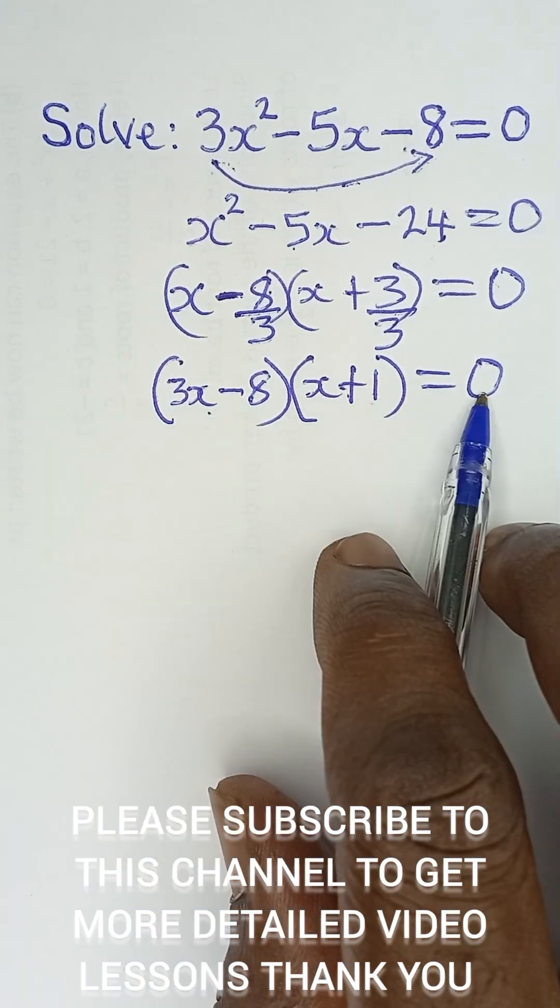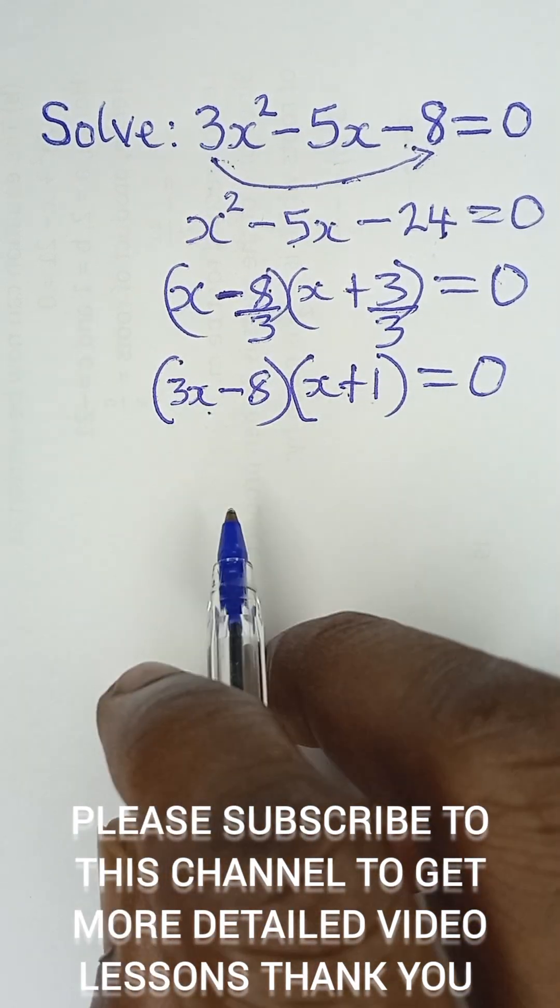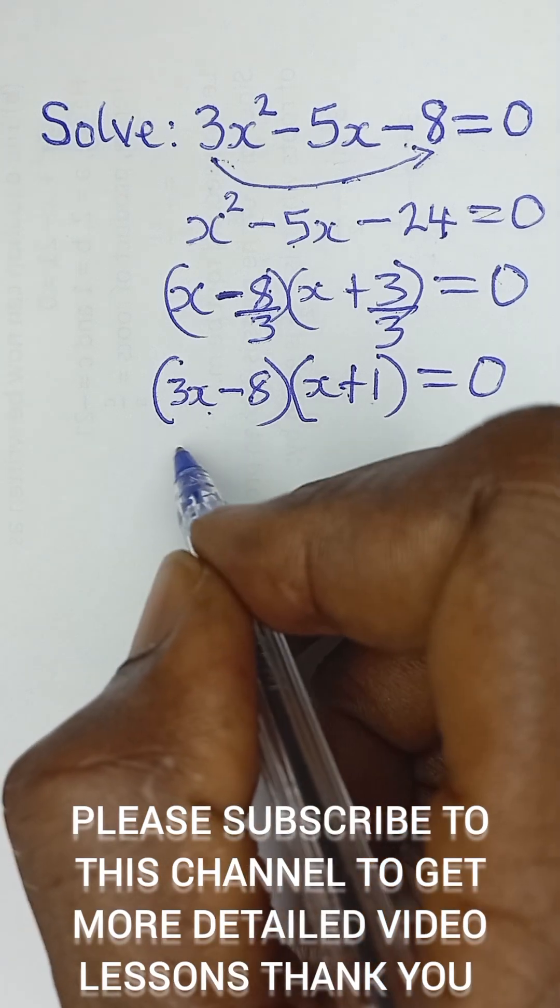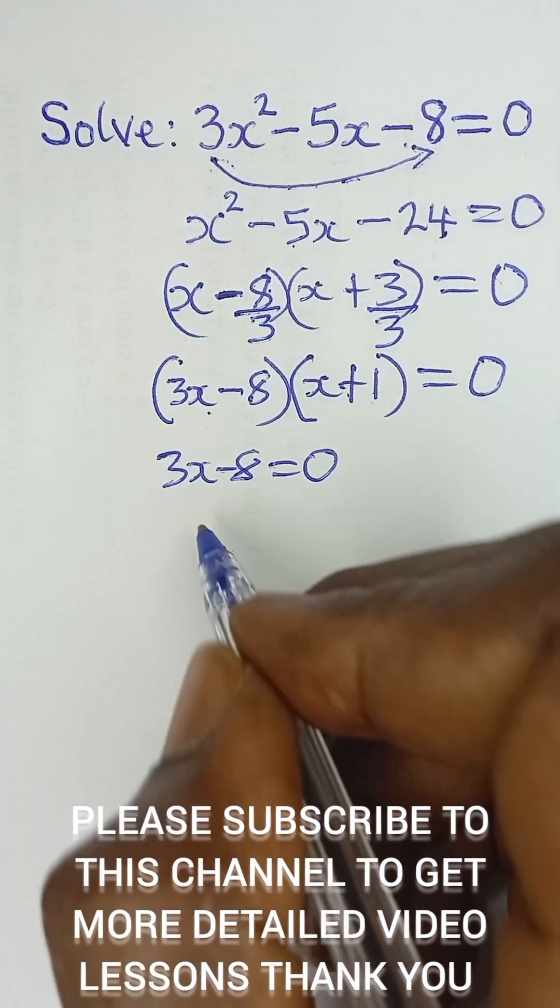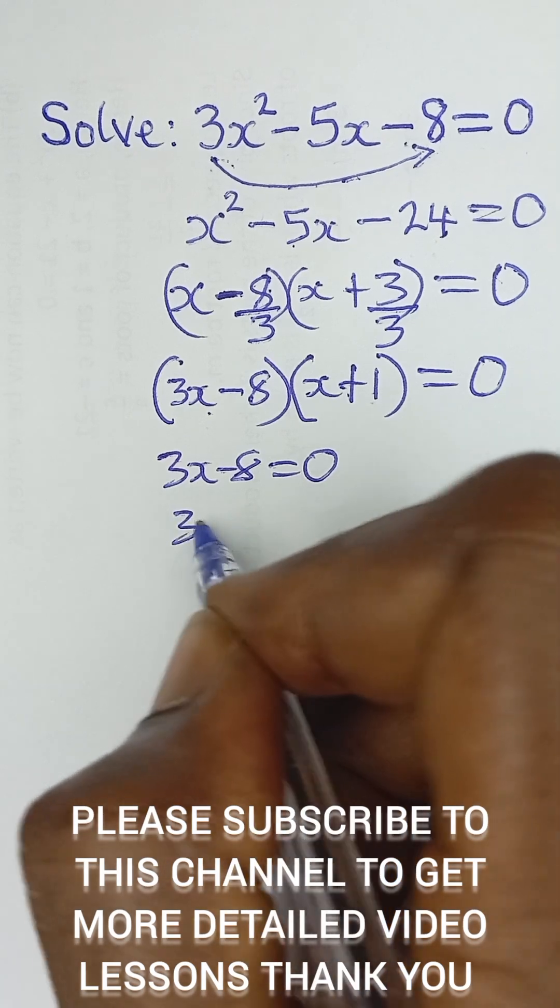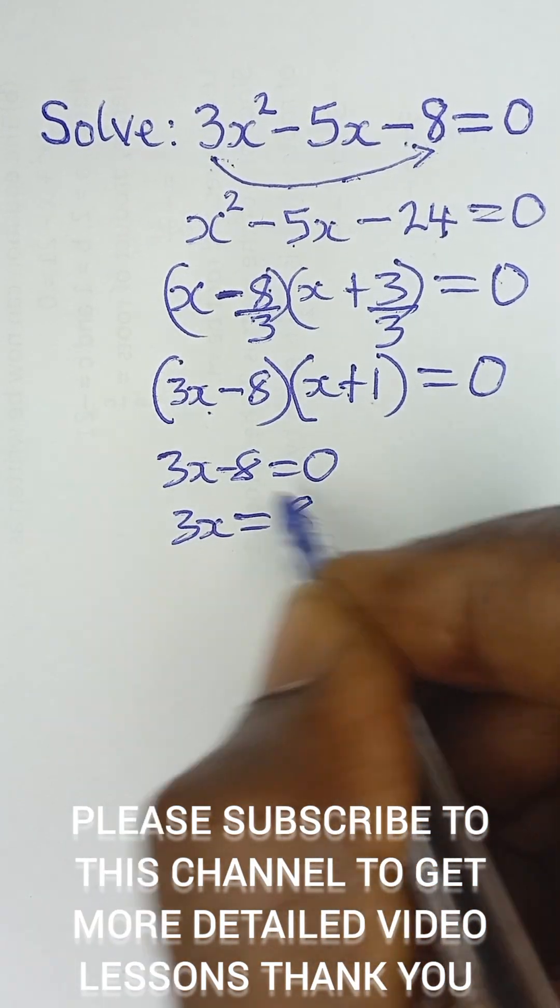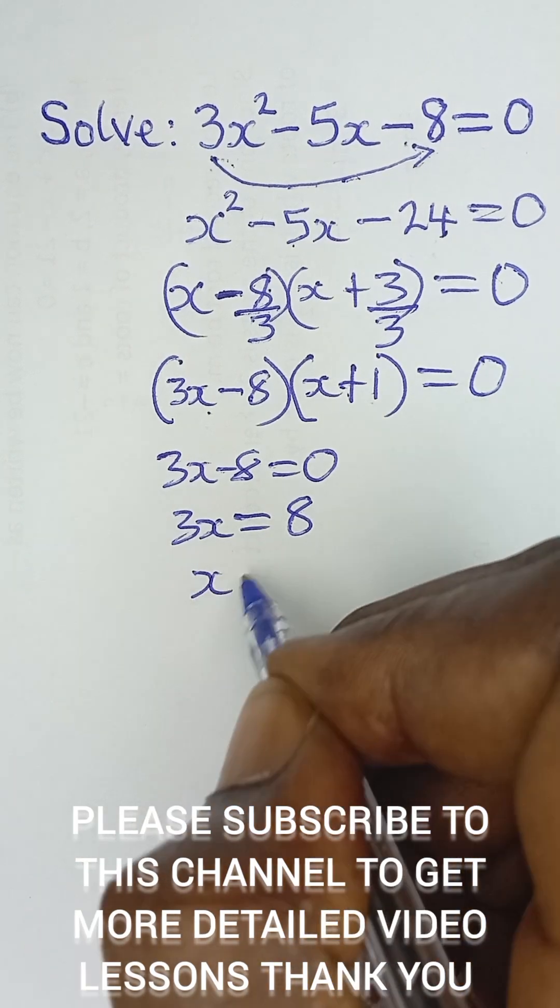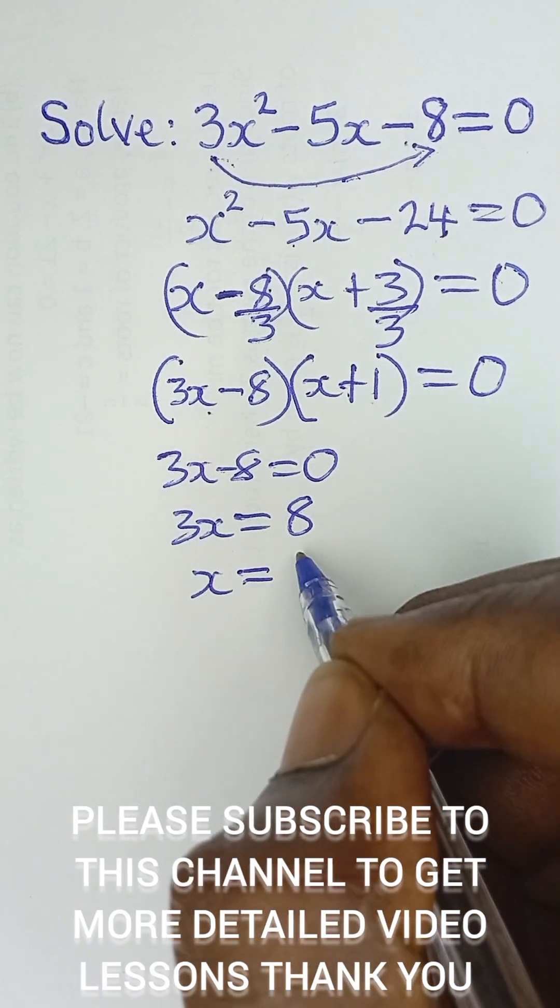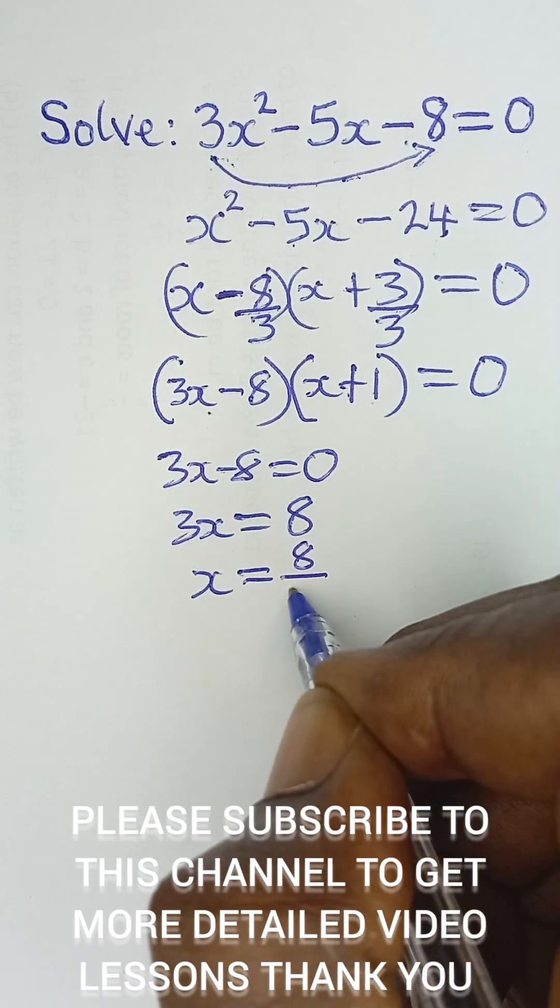So now we equate each of these brackets to 0 in order to obtain the value of x. So when we equate 3x minus 8 equals 0, that will give us 3x equals positive 8. When this negative 8 goes to that, it becomes positive 8. And so finally, we have x. When we divide both sides by 3, we have x equals 8 over 3.